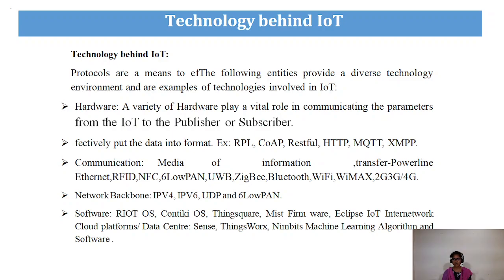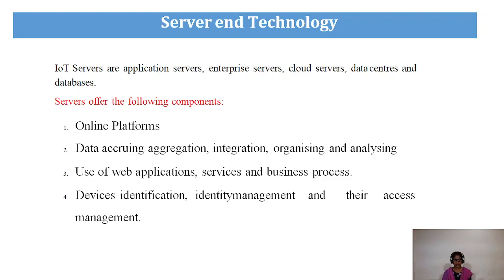It uses network backbone protocols including IPv4, IPv6, UDP, and 6LoWPAN networks. Software includes IoT OS platforms, Eclipse IoT, cloud platforms and data centers, and machine learning algorithms. IoT servers include enterprise servers, cloud servers, application servers, data servers, and databases. Online platforms handle integration, aggregation, organizing, analyzing, and use of web applications, services, and business processes, as well as device identification and device identity management.